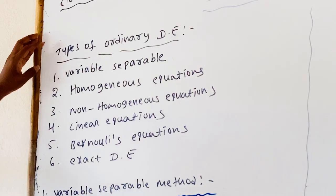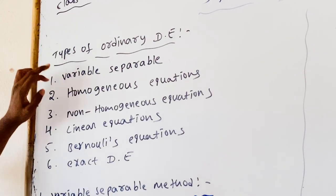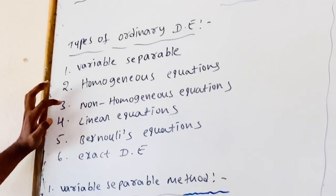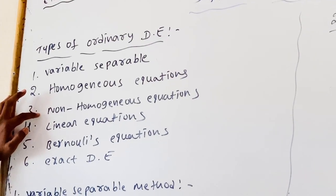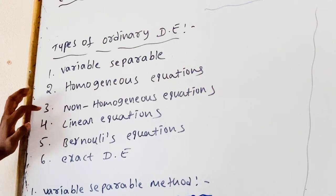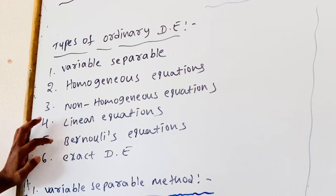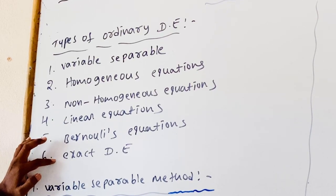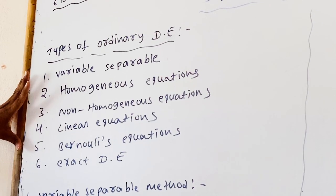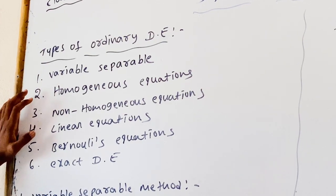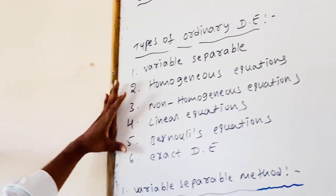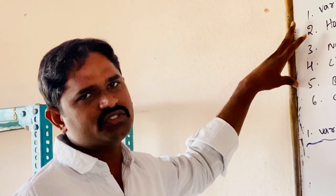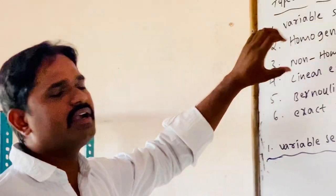They are classified as six types: one is variable separable, second is homogeneous equations, third is non-homogeneous equations, fourth is linear equations, fifth is Bernoulli's equations, and sixth is exact differential equations. There are individual methods to find the solution of each of these six types.